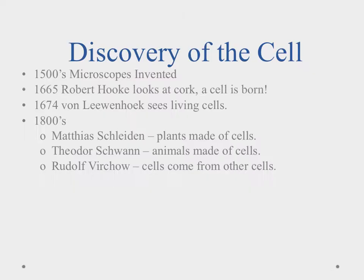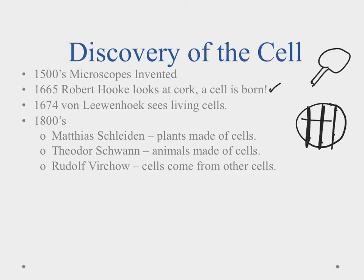Back in the 1500s, microscopes were invented. The first microscopes were nothing more than a magnifying glass — just a lens that made things look bigger. From there, they combined a couple of lenses and came up with a compound microscope. In 1665, Robert Hooke looked at cork through his microscope and noticed small little box-like areas that reminded him of cells in a jail.